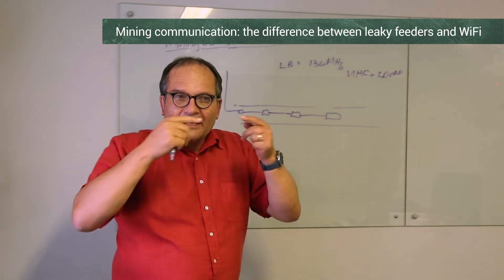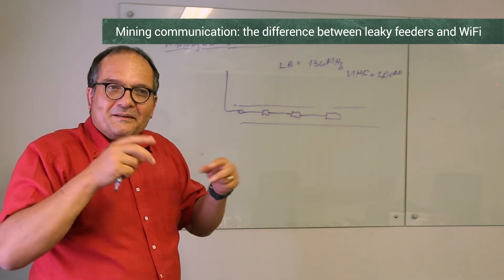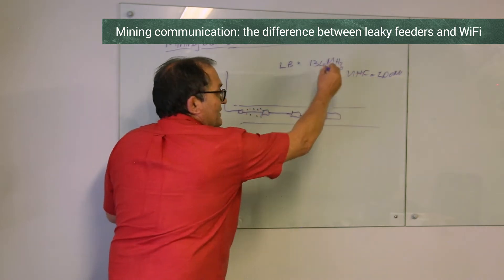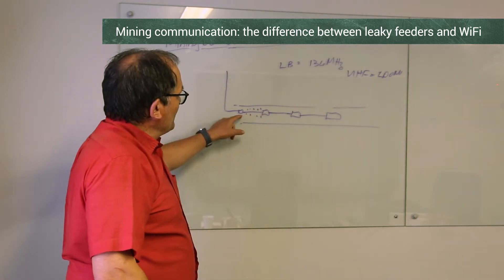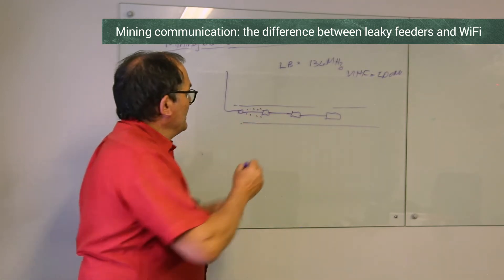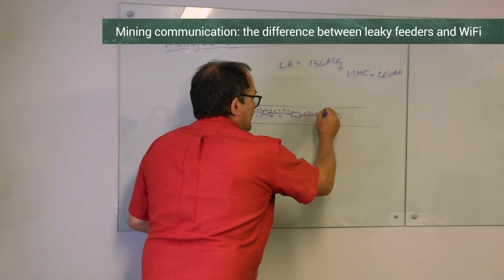Normally you want cables to be low loss, but you actually want this one to leak. It has a very bad braid so it will actually radiate some of the signal. But because it's leaking, you have to amplify it again at various points.